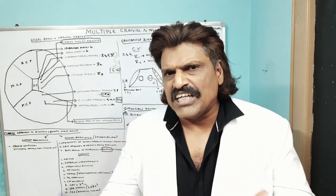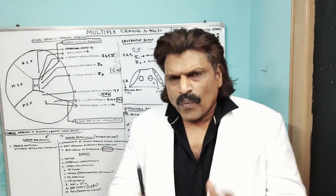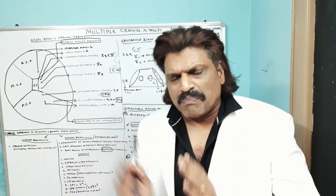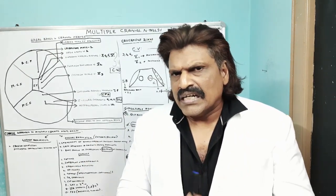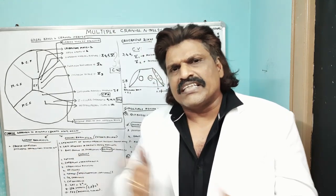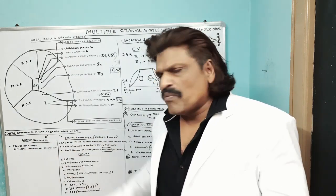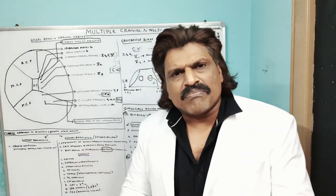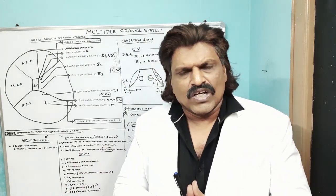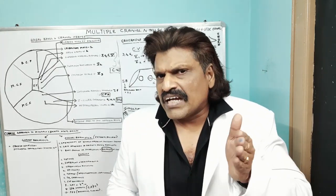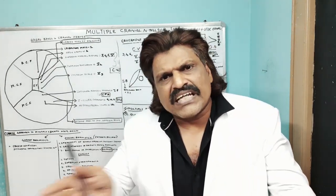The clinical approach to multiple cranial nerve palsy made easy: whenever we see a person with multiple cranial nerves involvement, the broad approach would be to find out whether it is within the brain stem or outside the brain stem — that is, whether it is intramedullary or extramedullary. What are the points which will help us to differentiate between these two?